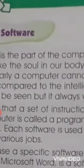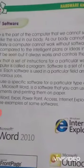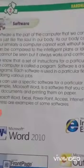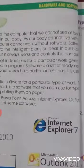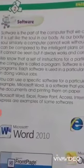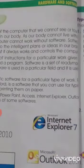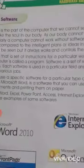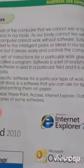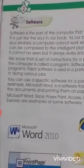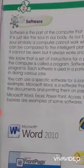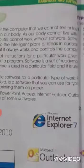Software is the part of the computer that we cannot see or touch. It is just like the soul in our body — as our body cannot live without a soul, similarly a computer cannot work without software. The computer can be compared to the intelligent plans and ideas in our brain. It cannot be seen, but it always works and controls the computer.